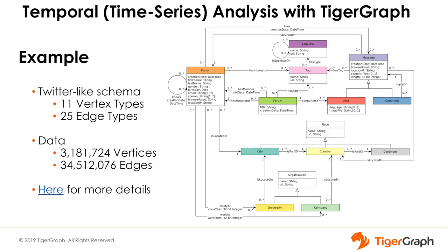The next foundational capability is temporal or time series analysis. Let's look at the internet or social media industry, an early adopter of graph technology. The schema shown is from the Social Network Benchmark by LDBC, Linked Data Benchmark Council, an initiative focused on benchmarking performance of graph databases. Date attributes are stored in four places. The schema shows a message either created and/or liked by a person. Each message has a timestamp and each person has a birthday. A message can be a post such as a tweet or a comment in response to another post. Messages are associated with one or more tags, which in turn are associated with a tag class organized into a hierarchy of subclasses.